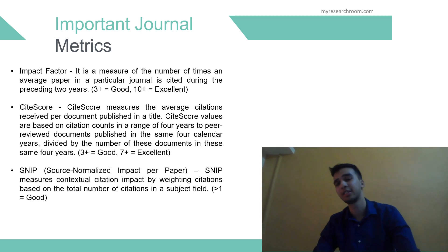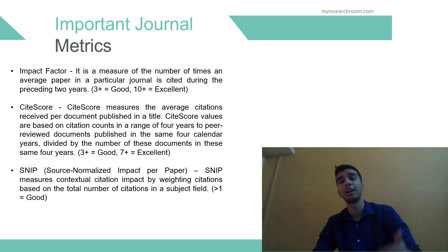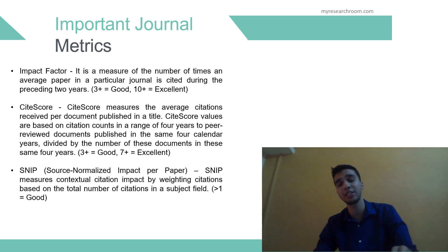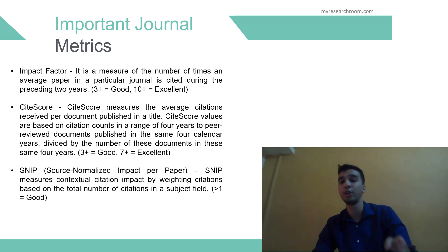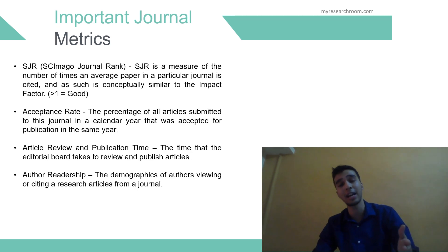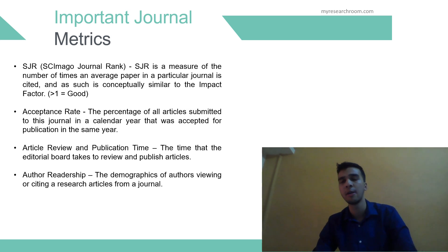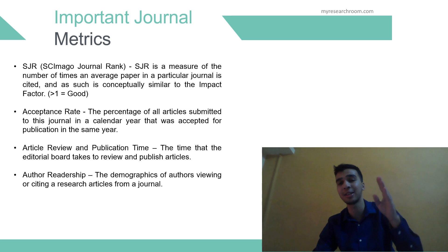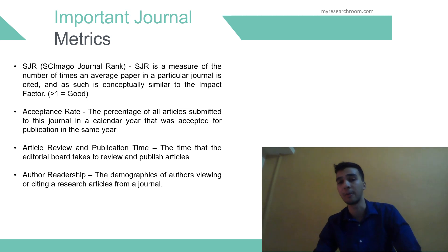Next is SNIP, which stands for Source Normalized Impact Per Paper. It measures contextual citation impact by weighing citations based on the total number of citations in a subject field. This unique perspective enables direct comparison of sources in different subject fields. The impact of a single citation is given higher value in subject areas where citations are less likely, and vice versa. A good SNIP score is above 1.